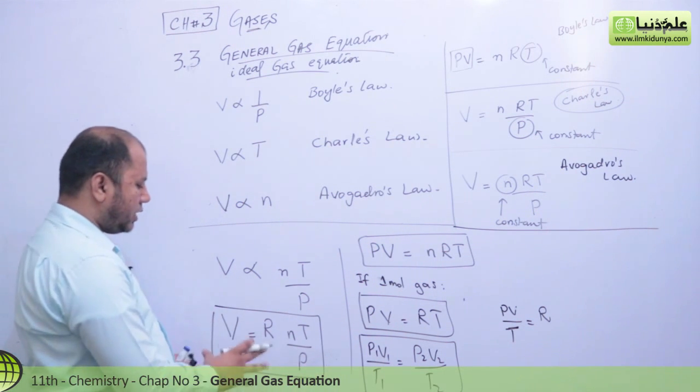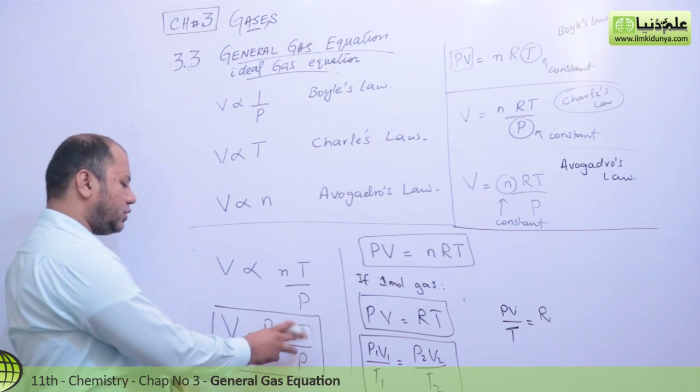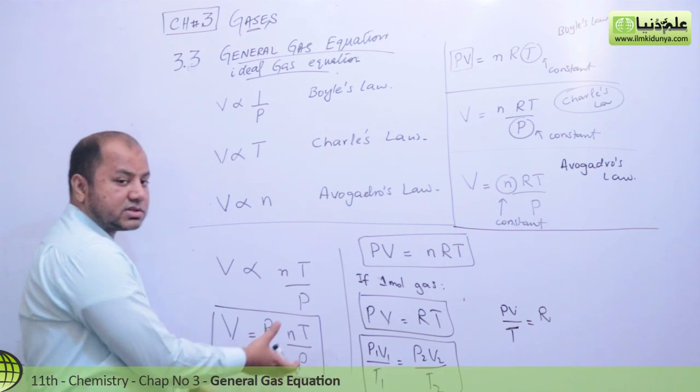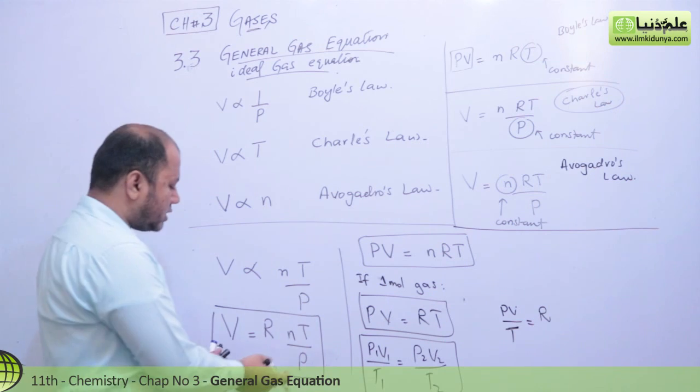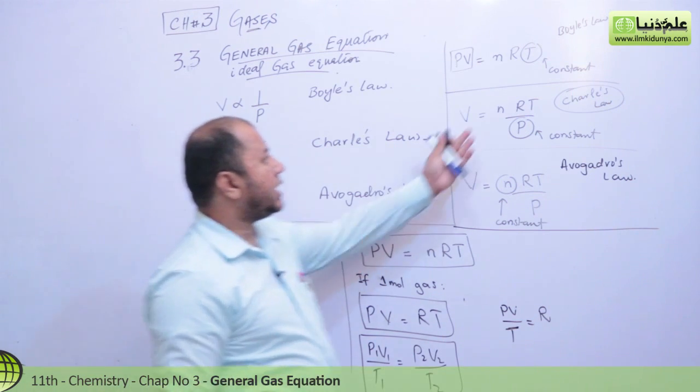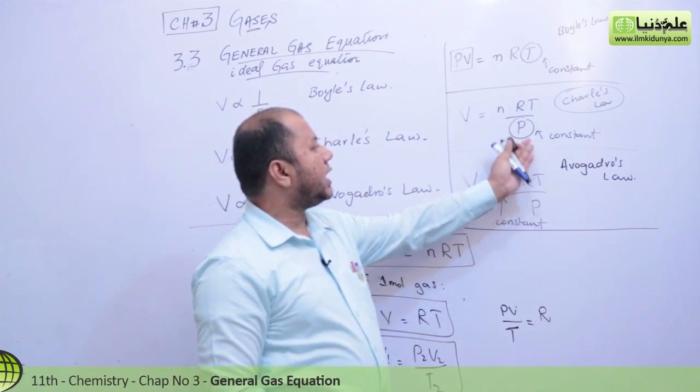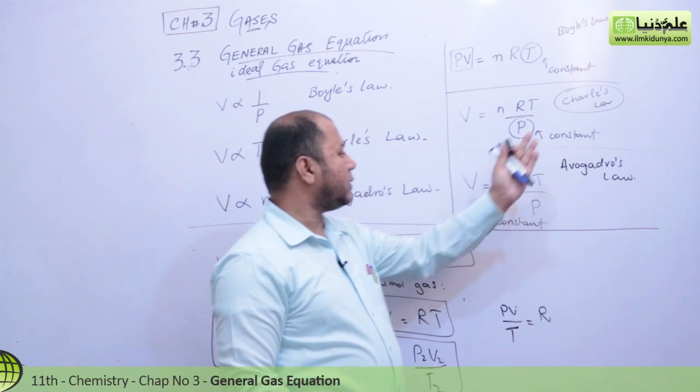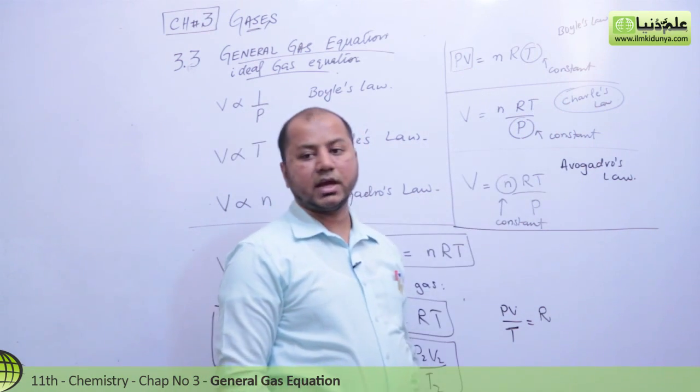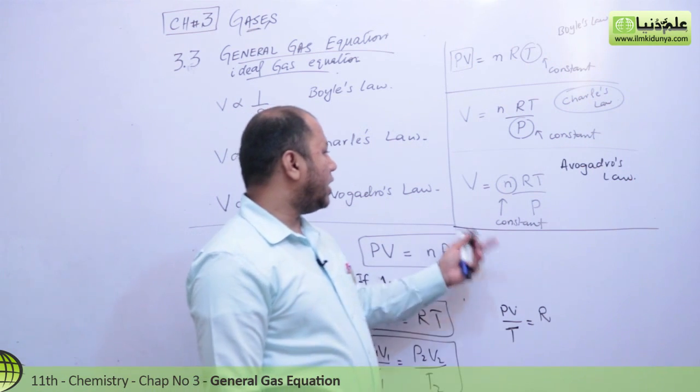This equation turned out like this. In this, you can take whatever constants you want, because different laws have taken different constants. If you take T constant, it becomes Boyle's equation. If you take P constant, it becomes Charles' equation. If you take n constant, it becomes Avogadro's equation.